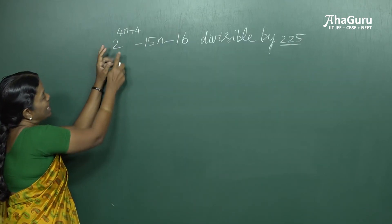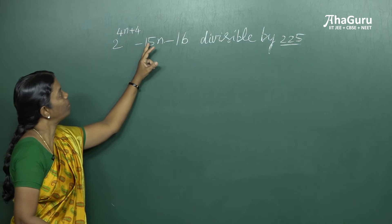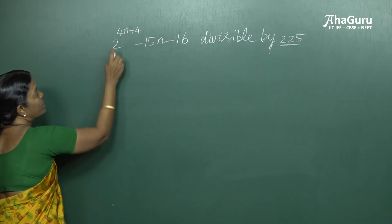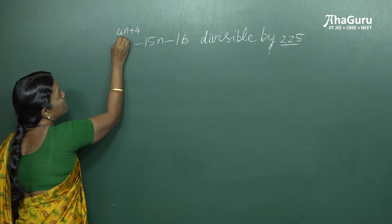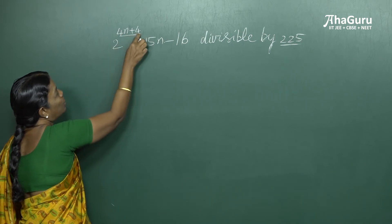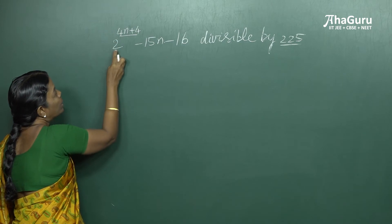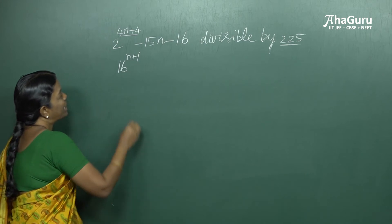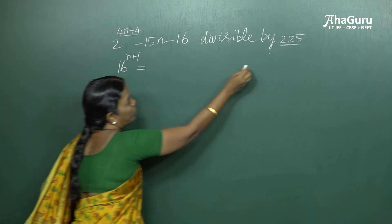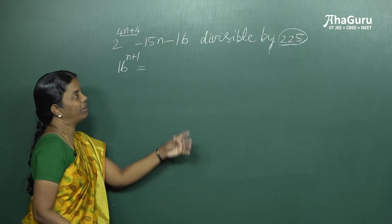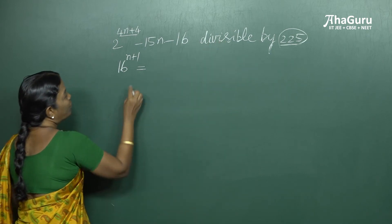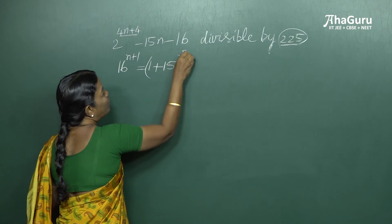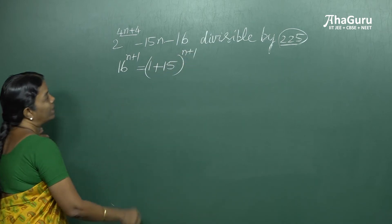We have to prove that the expression 2^(4n+4) minus 15n minus 16 is divisible by 225, using the binomial theorem. Notice that in the power you have a 4 common. If you take it out, 2⁴ is 16, so the expression becomes 16^(n+1). And since we need to prove divisibility by 225, which is 15², we write 16 as (1 + 15).